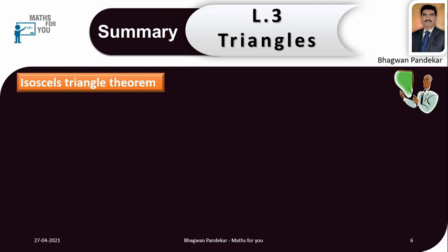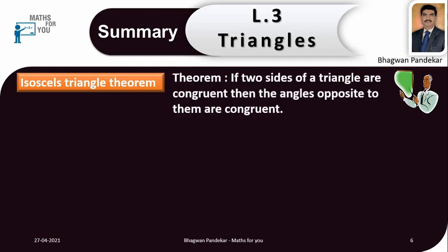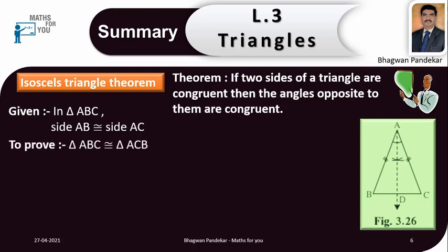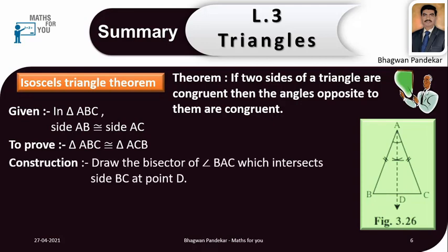Isosceles triangle theorem. In this theorem, if two sides of a triangle are congruent, then the angles opposite to them are congruent. Observing this figure, we can write given information. In triangle ABC, side AB is congruent to side AC. To prove: triangle ABC congruent triangle ACB. Construction: draw the bisector of angle BAC which intersects side BC at point D.